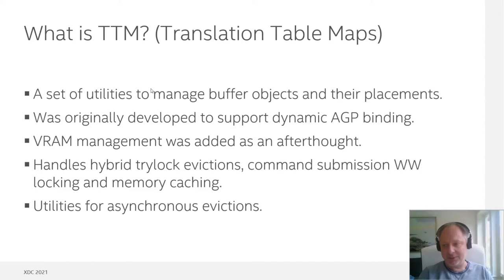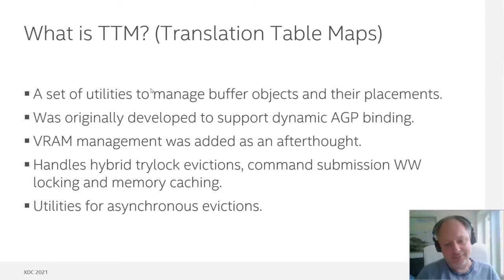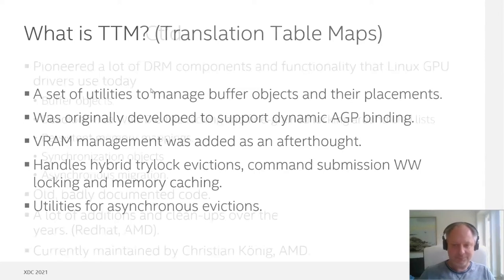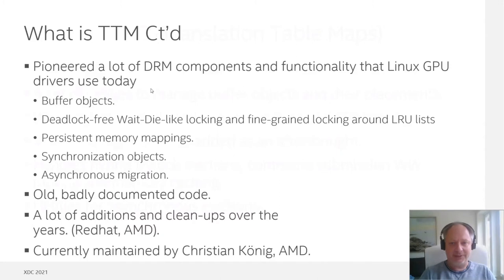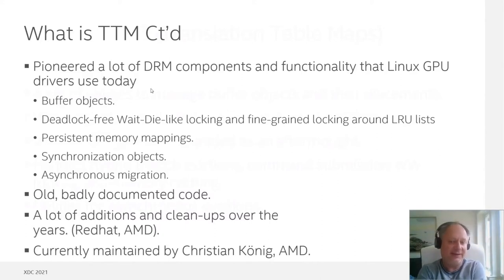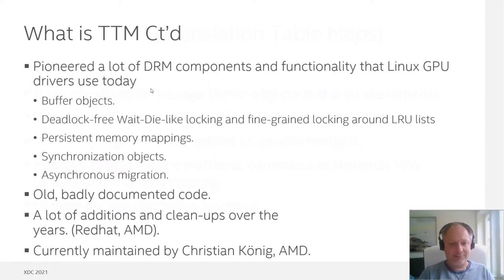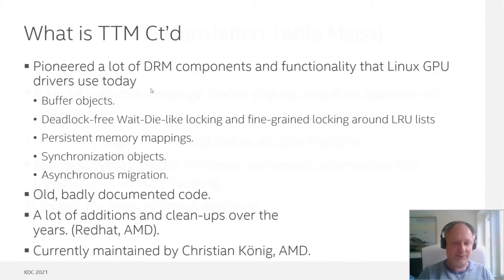We have command submission with wound-wait locking and various options to select memory caching on the pages we allocate. There are also some utilities for asynchronous evictions, which helps speed up things during eviction. TTM also pioneered a lot of DRM components and functionality that Linux GPU drivers use today, though they aren't necessarily in TTM anymore — they've been moved out to separate components. For example, buffer objects — the main component for that today is GEM. We had initially a variant of deadlock-free wait-die locking, similar to wound-wait locking, and also fine-grained locking around LRU lists, which wasn't the case for most GPU drivers at that time — they were using the big kernel lock or a struct mutex.